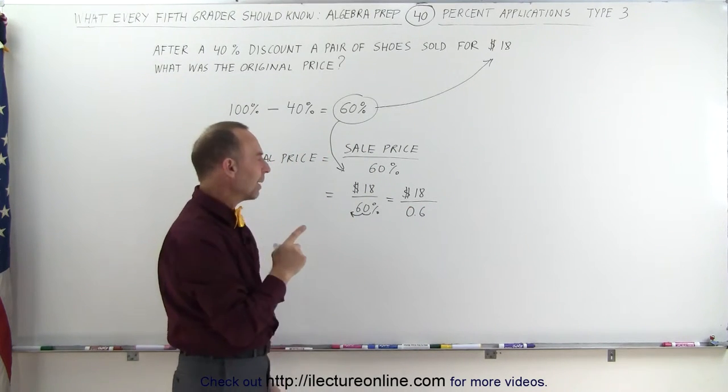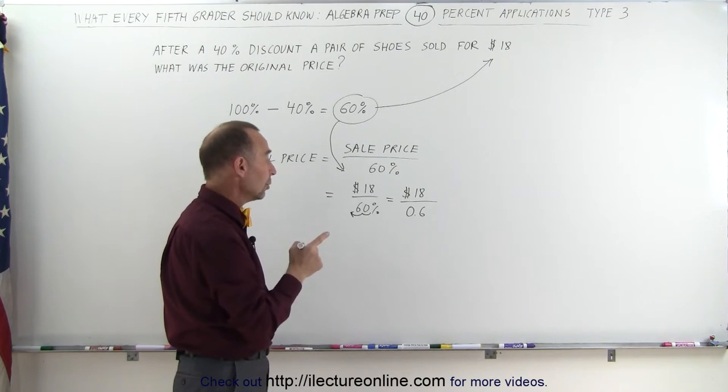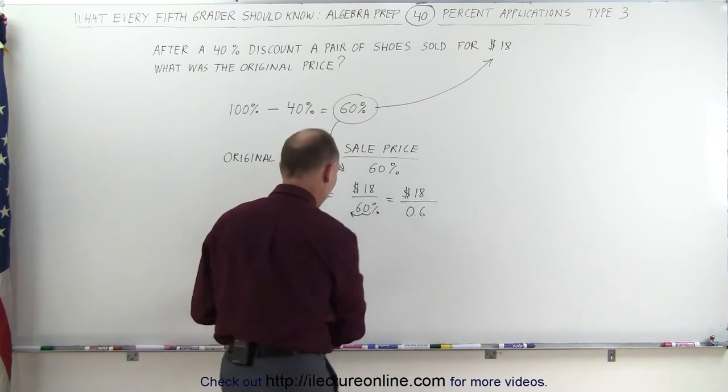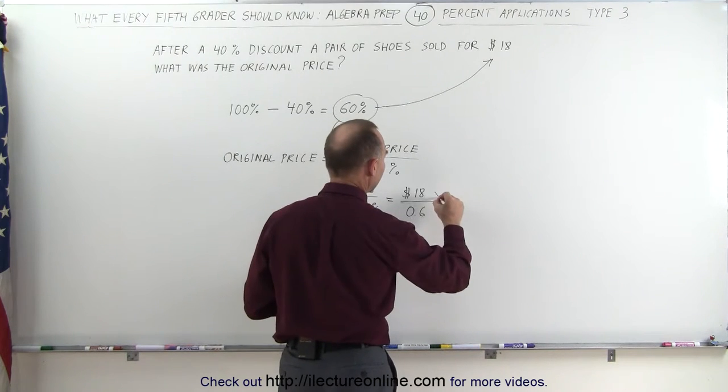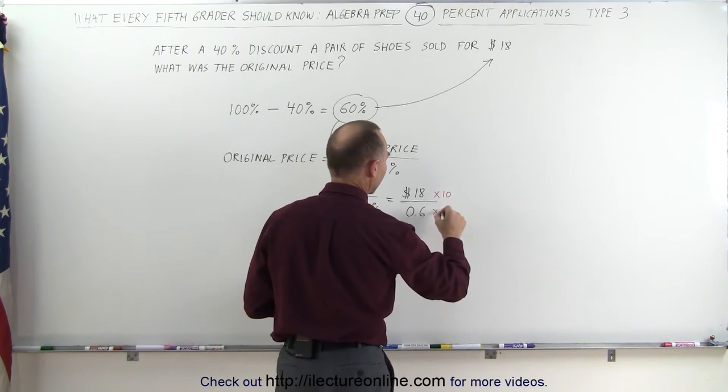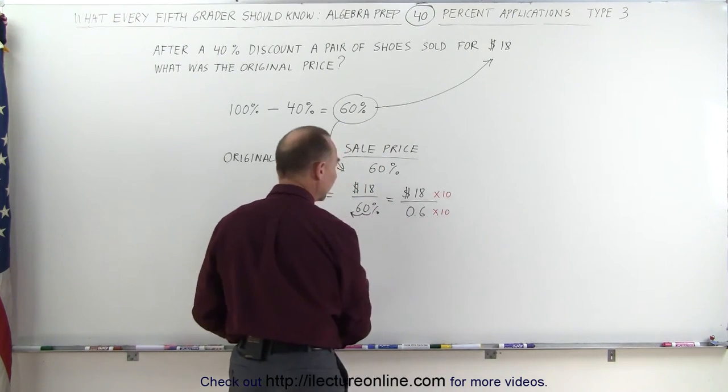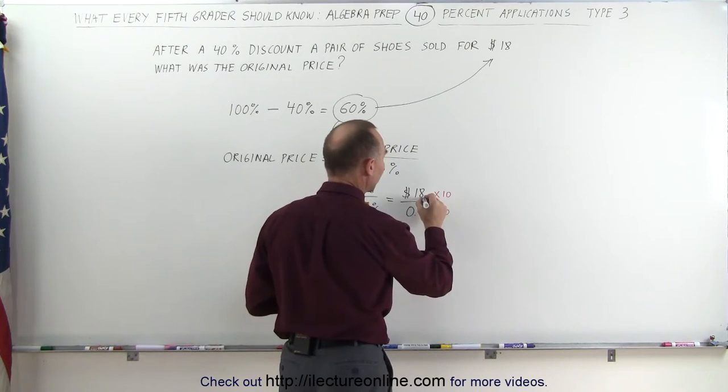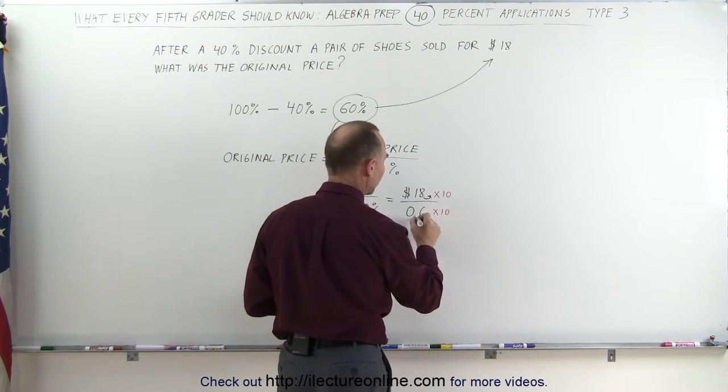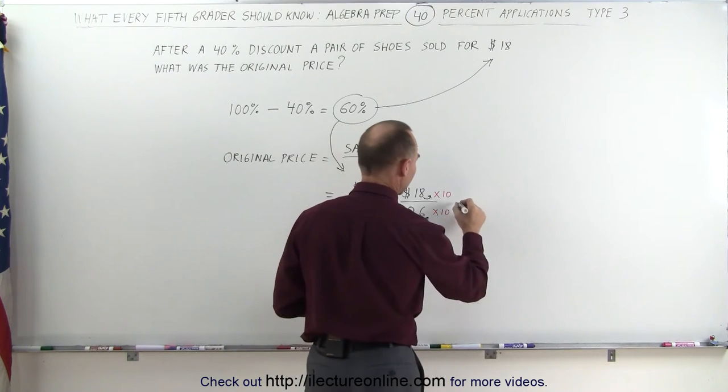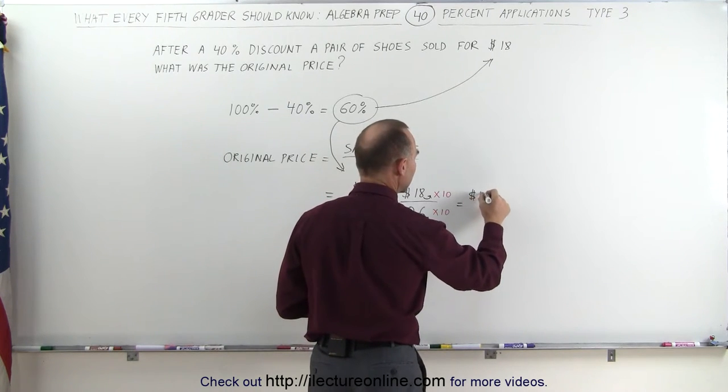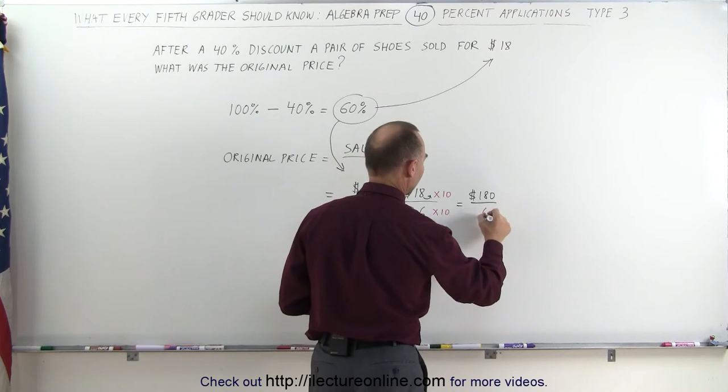Now when we divide by a decimal, what we can do is multiply both the top and the bottom by 10. So I'm going to multiply the top by 10 and the bottom by 10, the numerator and the denominator. That means I'm going to move the decimal place over once here, put the 0 there, move the decimal place over once, and we just have the 6. So this becomes 180 divided by 6.